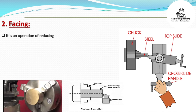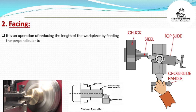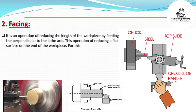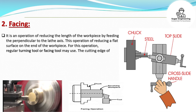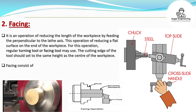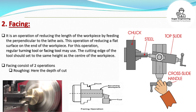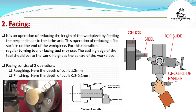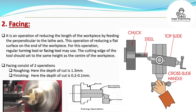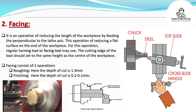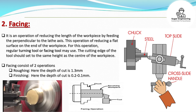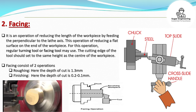Facing is the operation of reducing the length of the workpiece by feeding perpendicular to the lathe axis, producing a flat surface on the end of the workpiece. A regular turning tool or facing tool may be used, with the cutting edge set to the same height as the center of the workpiece. Facing consists of two steps: roughing, with a depth of cut of 1.3 mm, and finishing, with a depth of cut of 0.1 to 0.2 mm.